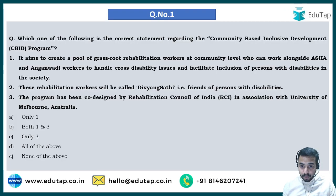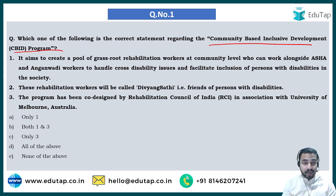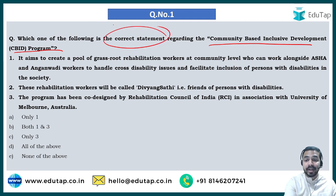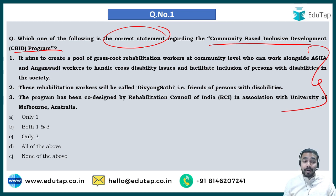If we talk about the CBID program, here is the very first question which is based on the community-based inclusive development program. All of you are required to answer the question in the comment section below. Please carefully read the question: which one of the following is the correct statement regarding the community-based inclusive development program? Quickly go through the statements and tell me in the comment section below which is correct.